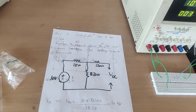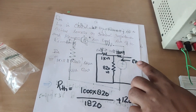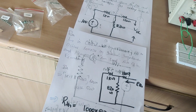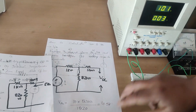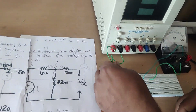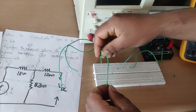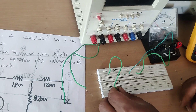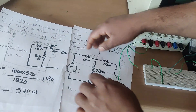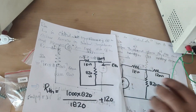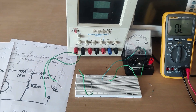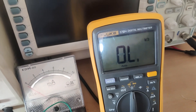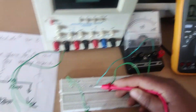To calculate RTH, the load is already removed. I need to replace the voltage source by its internal impedance, which means replacing it by a short circuit. I will switch off the power supply, remove the leads, and replace the source with a short circuit. Then I measure the resistance at the output terminals using the multimeter. RTH is approximately 563 ohms.